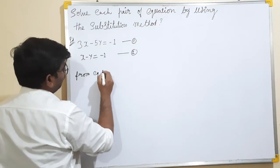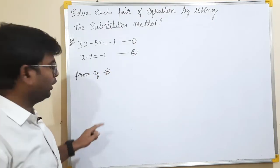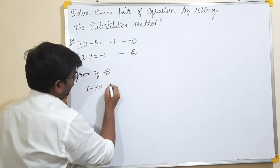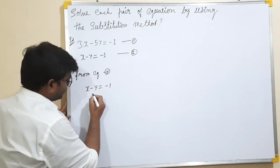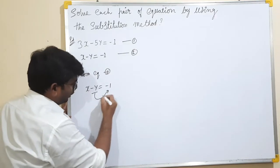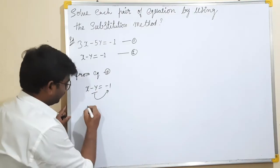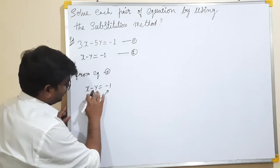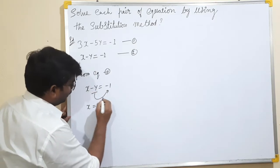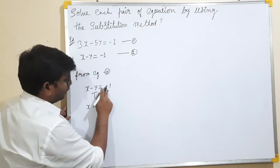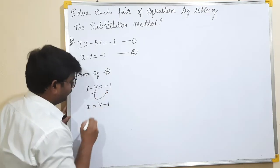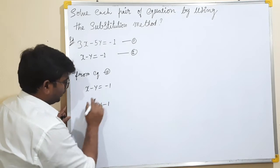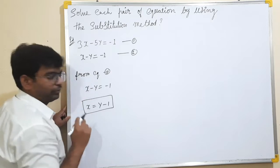From equation 2: x minus y equals to minus 1. Adding y to both sides, x equals to minus 1 plus y. So, x equals to y minus 1.